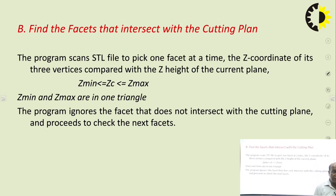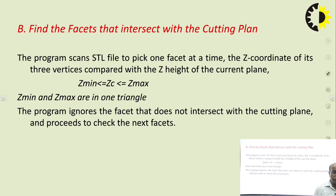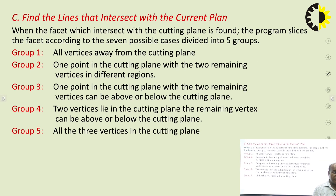Next, find the facets that intersect with the cutting plane. The program scans the STL file to pick one facet at a time. The Z coordinates of its three vertices are compared with the Z height of the current plane. The program ignores facets that do not intersect with the cutting plane and proceeds to check the next facet. When a facet intersecting the cutting plane is found, the program slices the facet according to seven possible cases divided into five groups.